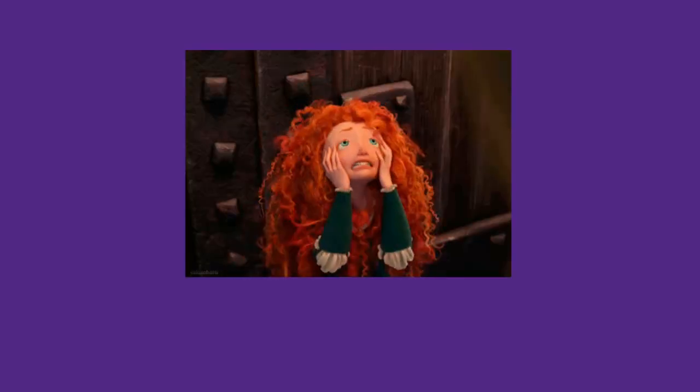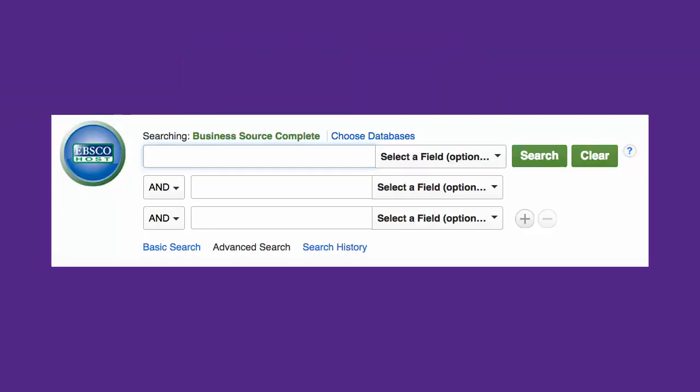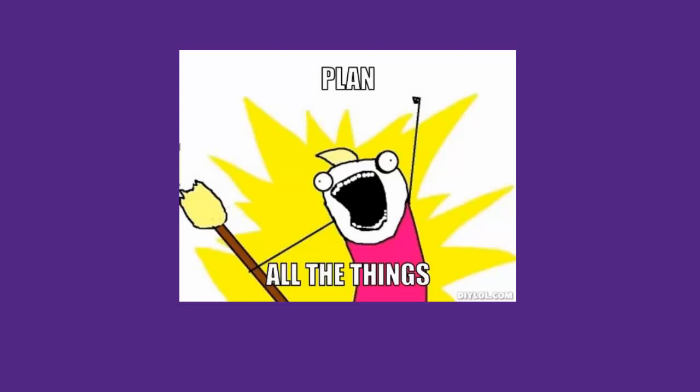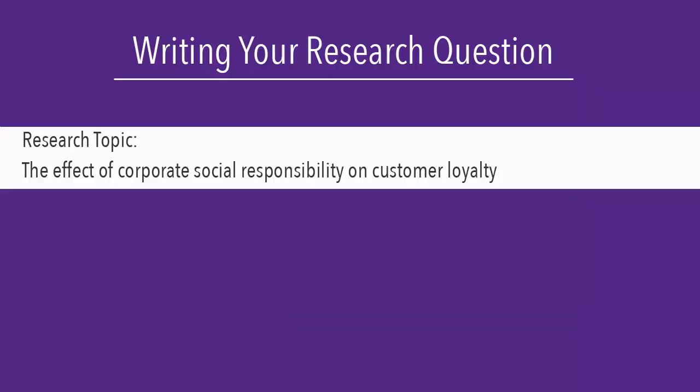It's easy to get frustrated when searching for articles in library databases because the databases do not work in exactly the same way as Google. You have to use different search techniques to find the information you need. This is why it's a good idea to plan out your search before you start looking for articles.